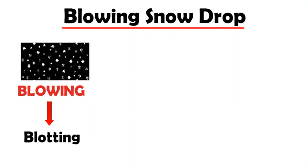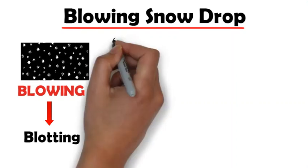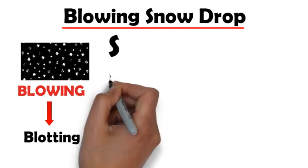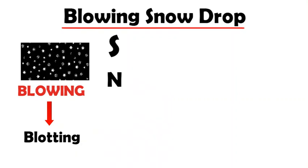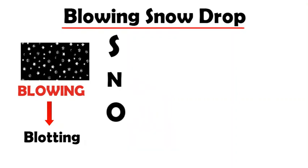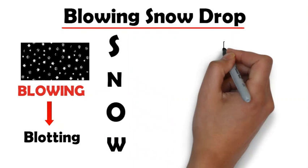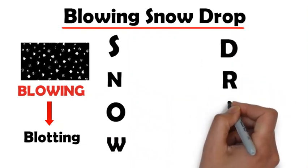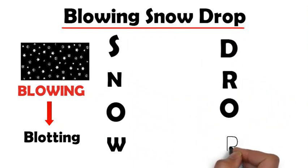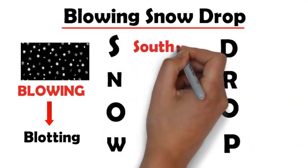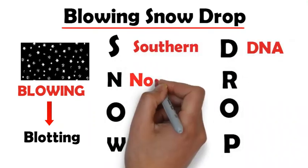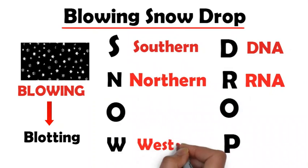Like this: S, N, O, W, D, R, O, P. Here southern for DNA, northern for RNA, and western for protein. Remember there is no eastern blotting.